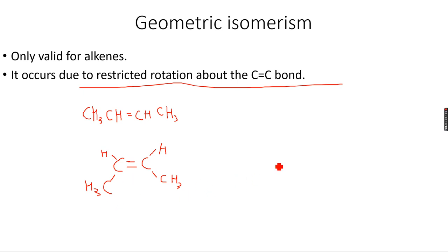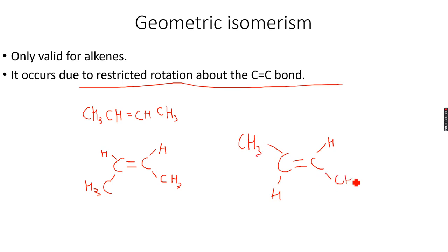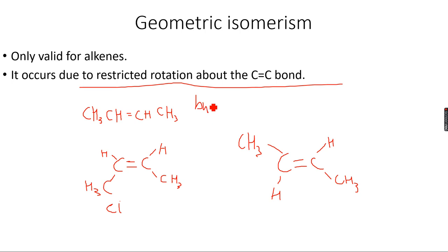One is this isomer and the other one is this isomer. You can see that the H atoms in this one are on one side and the CH3 groups on this one are on one side — all similar groups are on one side. This is called the cis isomer. This compound was but-2-ene, because the alkene was on the second carbon atom.